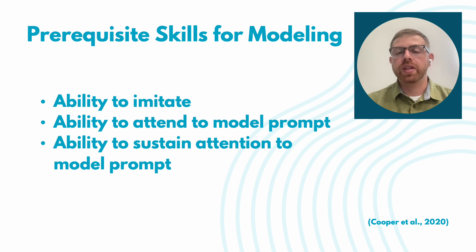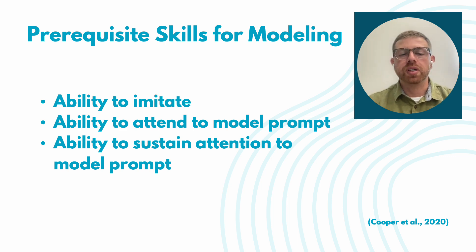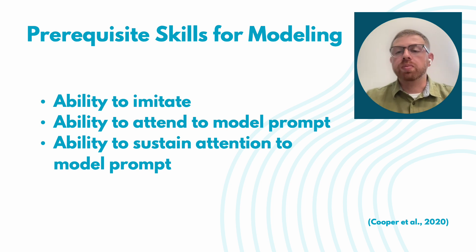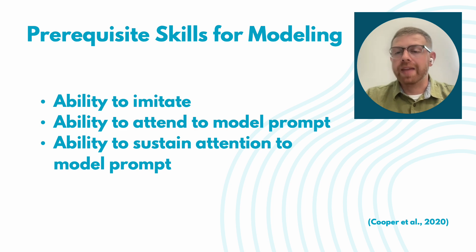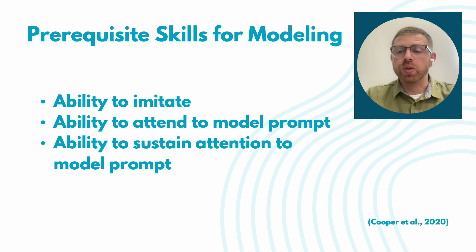For this specific prompt type — modeling — there are some prerequisite skills we need to consider. The ability to imitate is important. If we are trying to model the desired response, it's important that the student or individual we're working with has the ability to observe and attend to the model prompt — to look and pay attention to what we're doing — and then take that information in and imitate what they have just observed. These are typically the prerequisite skills needed for modeling to be successful.